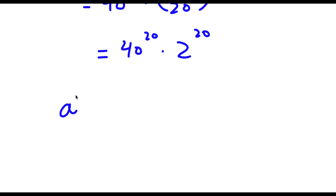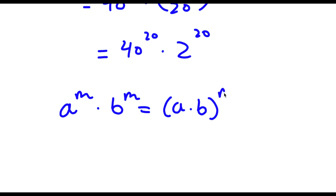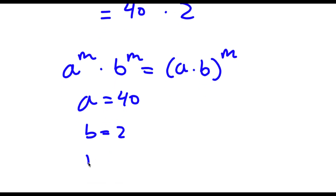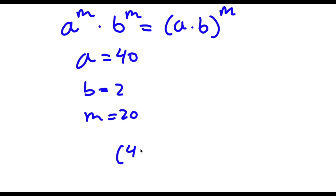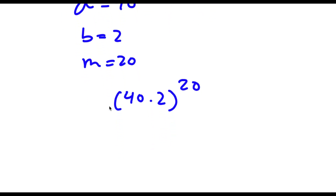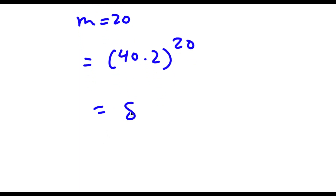Now if I have something in the form a to the power of m times b to the power of m, this can be written as (a times b) to the power of m. So here a is 40, b is 2, and m is 20, giving me 40 times 2, to the power of 20. Now 40 times 2 is 80, so I have 80 to the power of 20. And this is the most we can simplify, so 80 to the power of 20 is our answer.